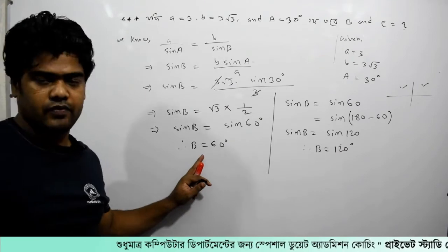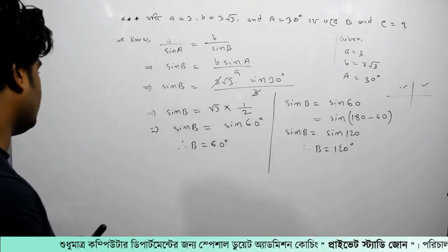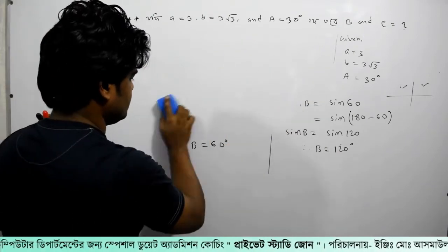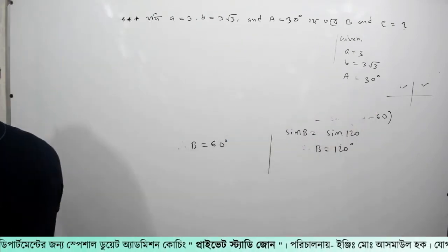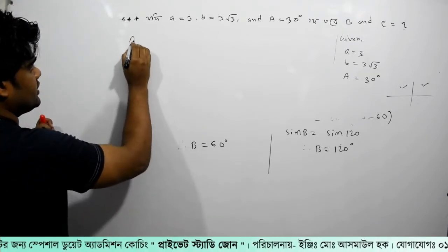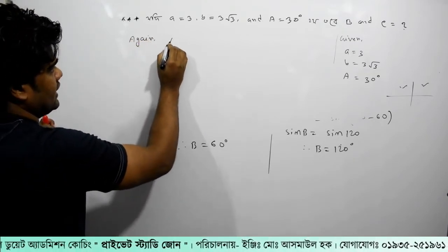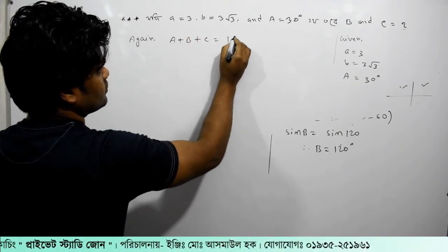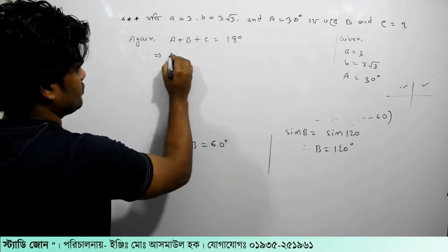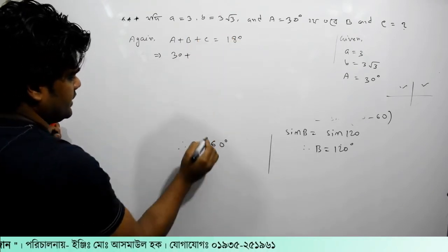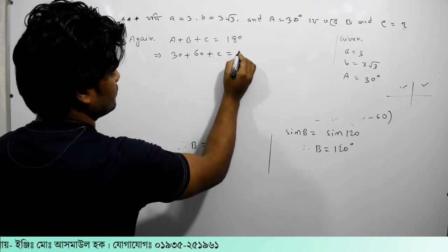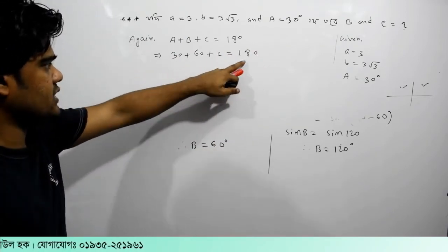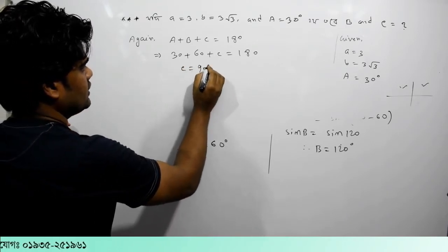If B equals 120 degrees, then using A plus B plus C equals 180 degrees, we can find C. With A equal to 30 degrees and B equal to 120 degrees, C equals 180 minus 150, so C equals 30 degrees. And if B equals 60 degrees, then C equals 90 degrees.